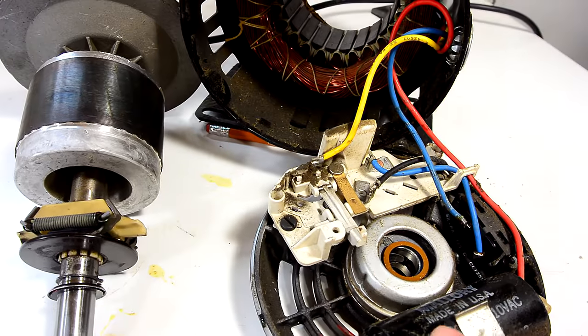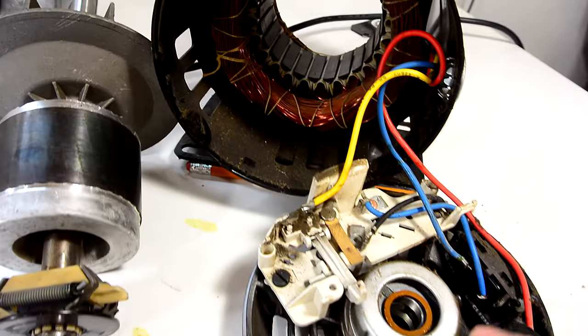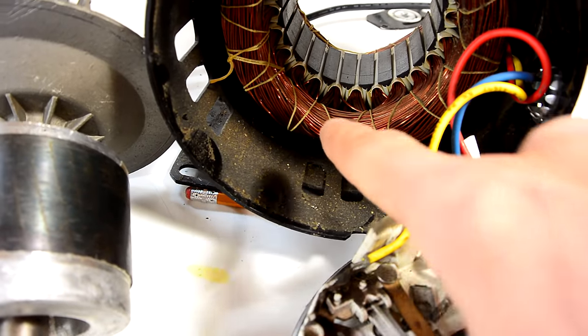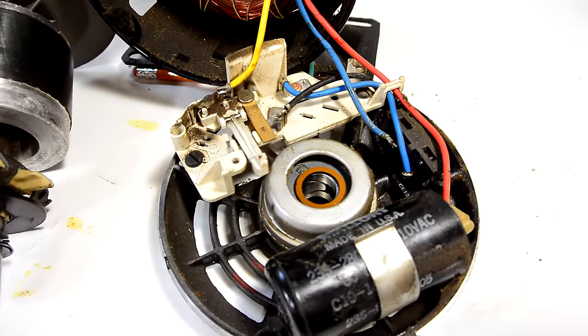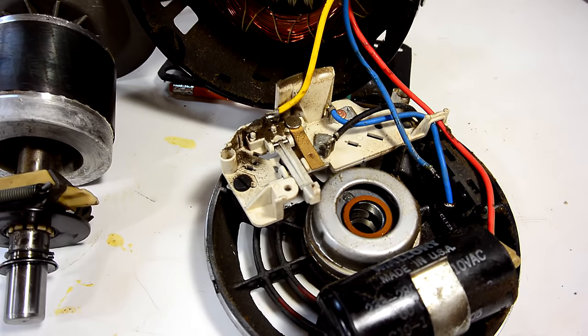And because we turn off the winding once the motor's up to speed we can also use a much thinner winding for the starter winding and save a bit of money that way because copper is expensive. So just to turn off the starter winding makes an awful lot of sense.